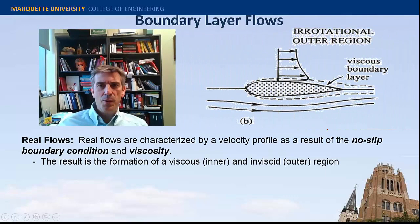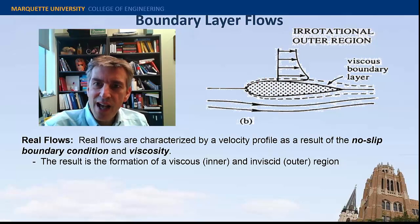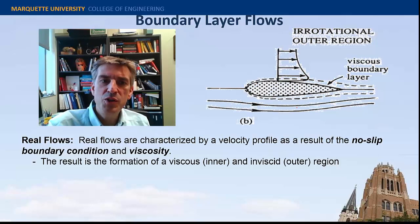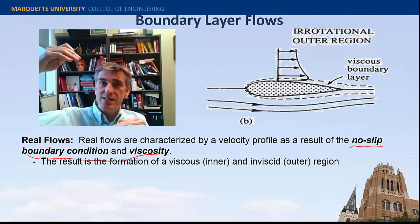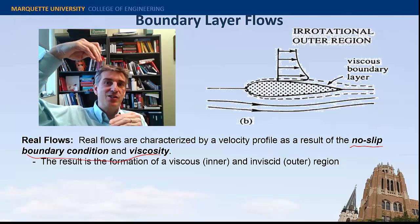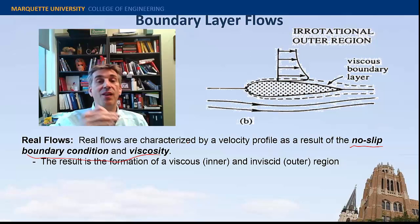Let's talk about boundary layers. We talked about irrotational flow, and you've got a good feeling for what irrotational flow is. Now we're going to talk about viscous flow. The irrotational flow exists outside the boundary layer — outside this viscous core. This viscous core is really developed through the no-slip boundary condition and viscosity, where the fluid has to come to rest on the surface.